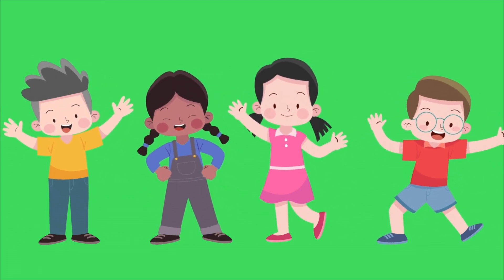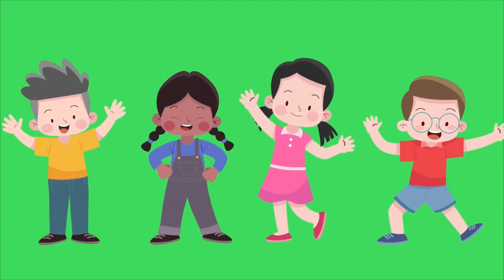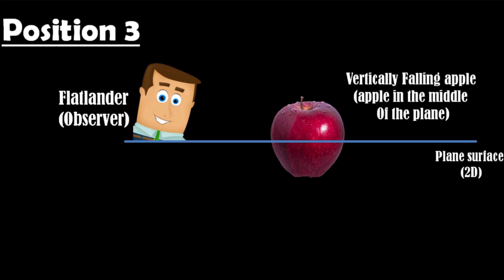However, since Flatlanders have one-dimensional retinas, they would only perceive a line segment at any given moment, not the full circle.